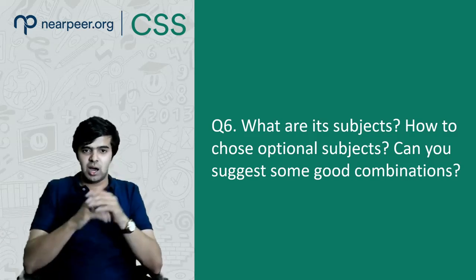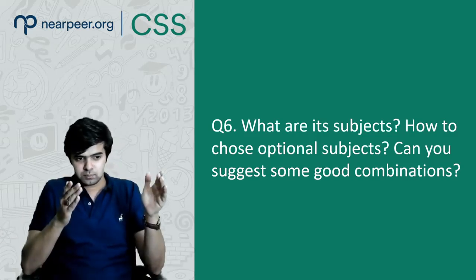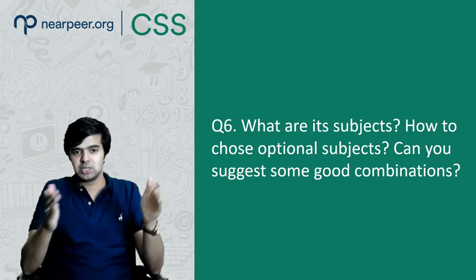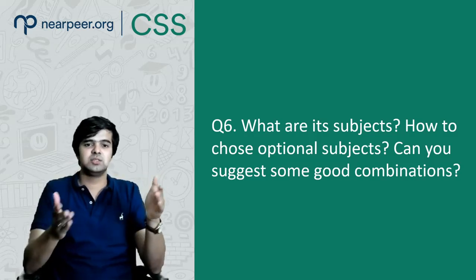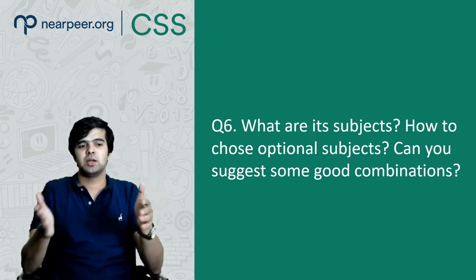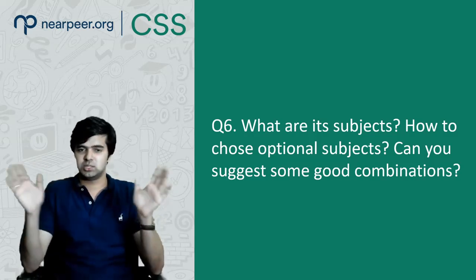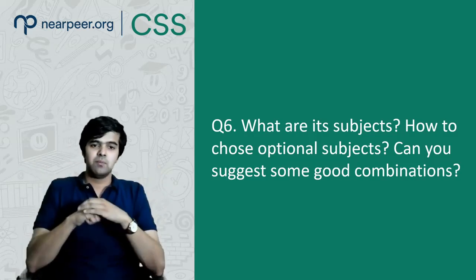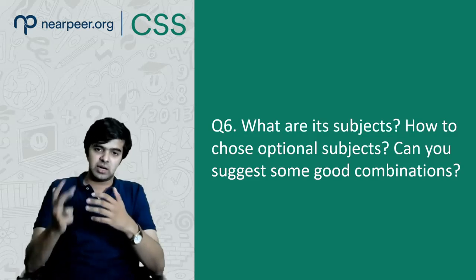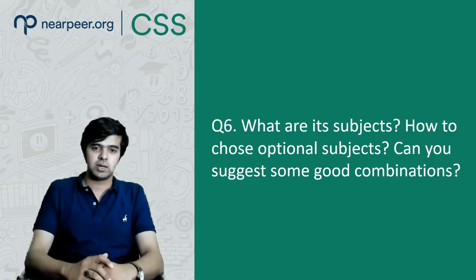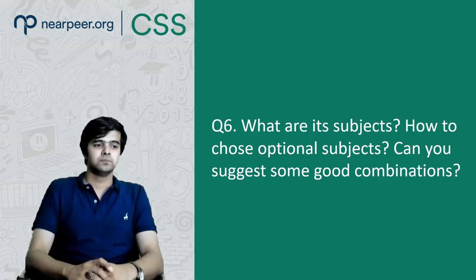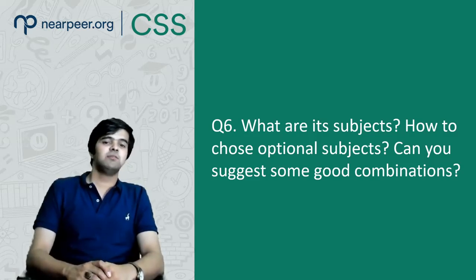After applying the first criteria — interest — you will have shortlisted three to four subjects that you feel are in your interest area. Then you move on to the other criteria. What is the second criteria? It is academic relevance.